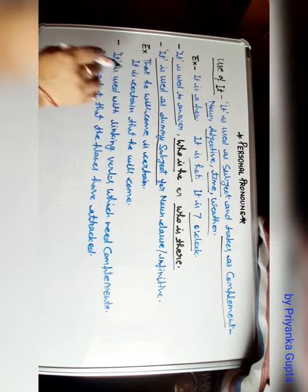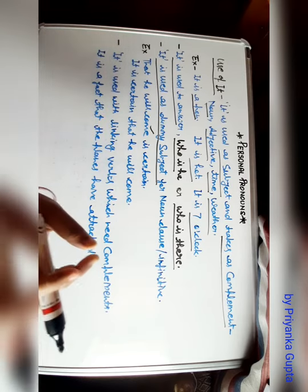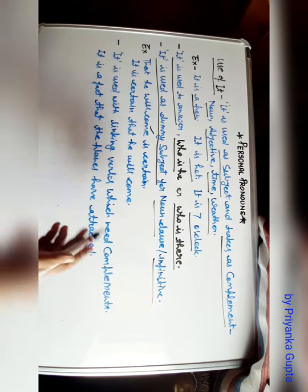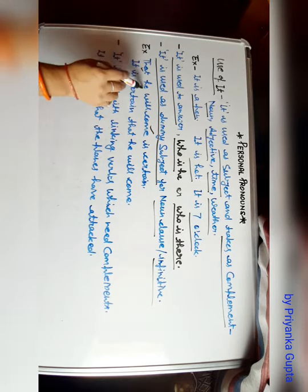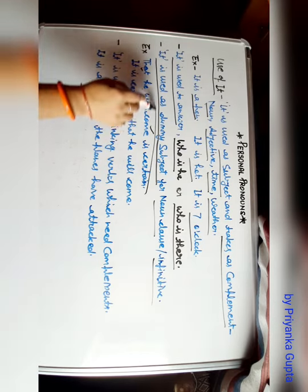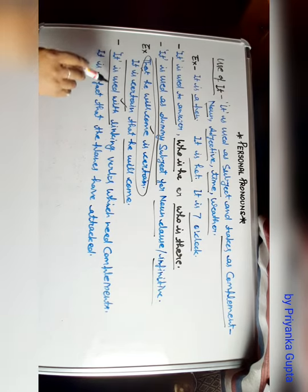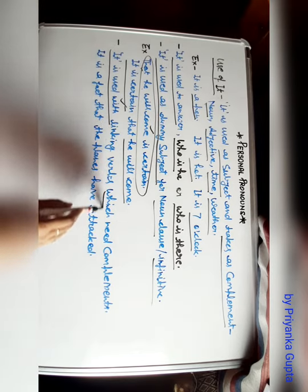It is used to answer who is he or who is there. It is used as dummy subject. How it is used as dummy subject for noun clause infinitive? Let's see some examples. That he will come is certain, this is your noun clause. And we can say it is certain. Look here, it is certain that he will come.